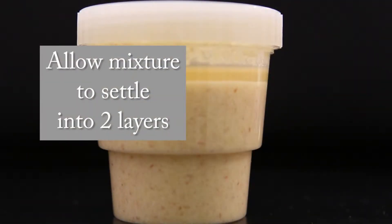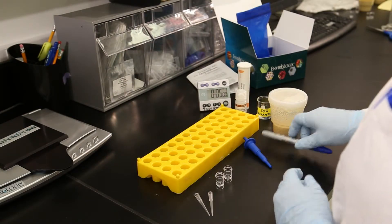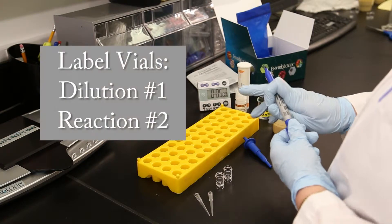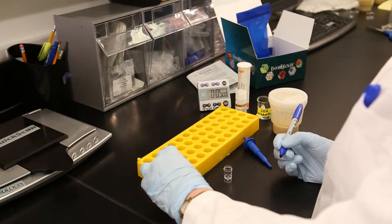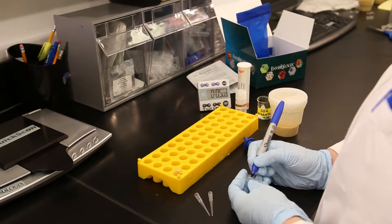Allow the mixture to settle into two layers. The top layer contains Fumonisin residues and will be used in testing. Set aside two vials and two pipette tips. The dilution and sample vials should not be mixed.